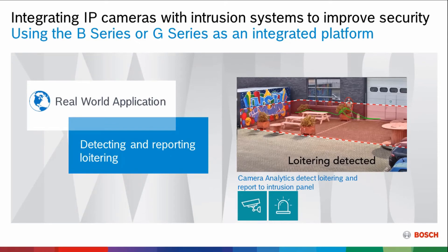Loitering. You can have a camera looking at an area where you don't want people to be and detect if someone is loitering. The camera can detect someone in an area or at a time when they're not supposed to be there and activate the loitering event, which can send a report, call the building manager — whatever you need to do to get that person out. Imagine it's not just behind a business, but by the back door of a school where kids are inside. We activate the keypad in the principal's office and send a report to the custodian to get that person out.